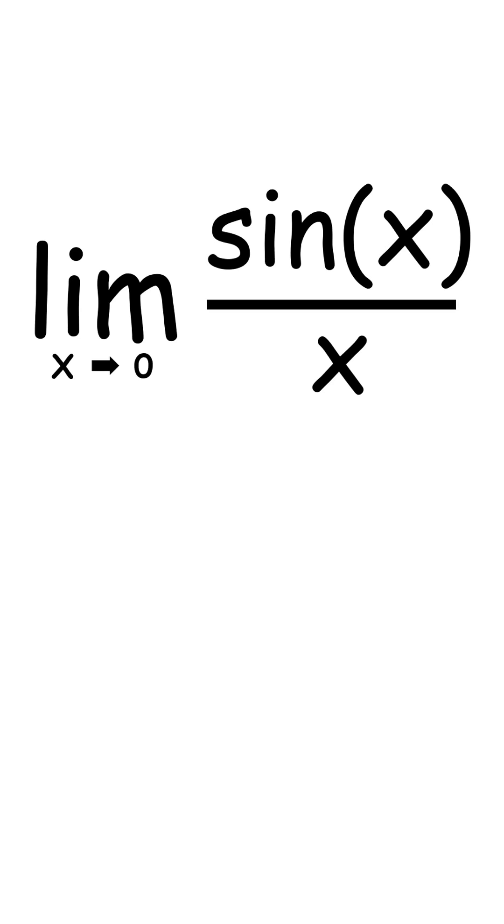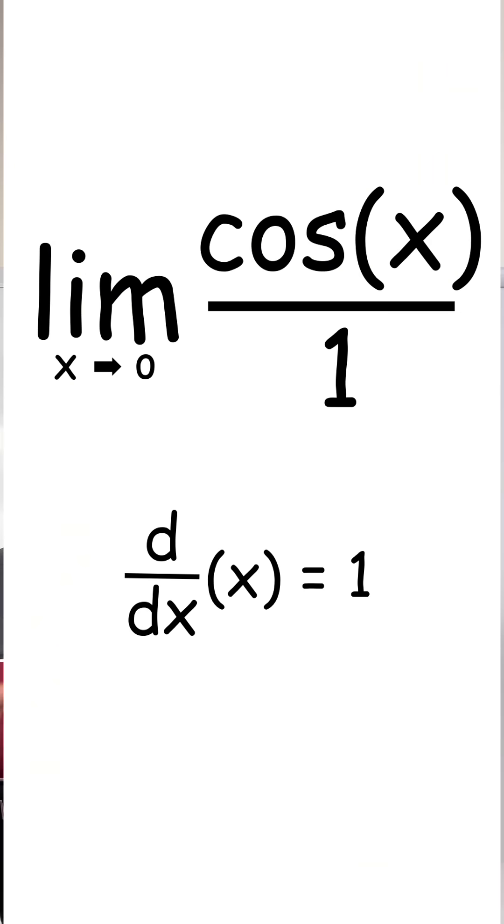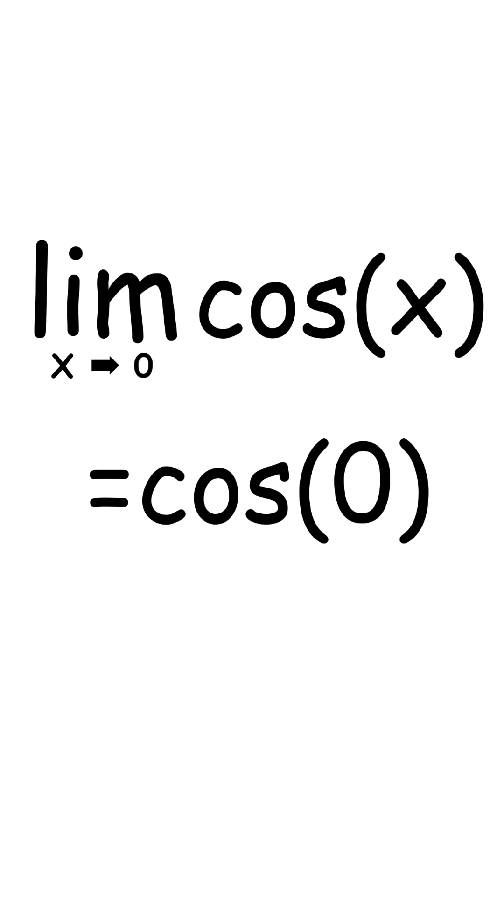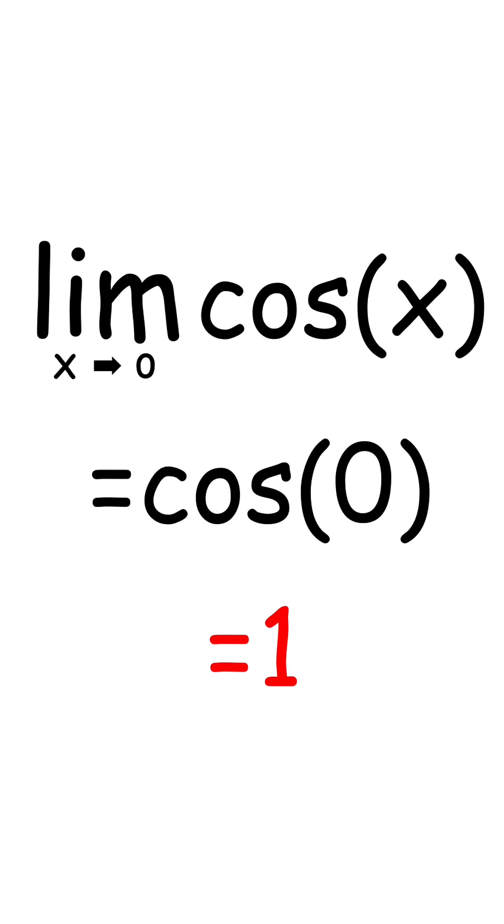So for example, let's use it in this limit that I just gave you. We can take the top function sine of x and take its derivative to make it cosine of x. Then we take the bottom function x and take its derivative to make it 1. Now all you have is cosine of x where you could plug in 0 and get a real number like 1.